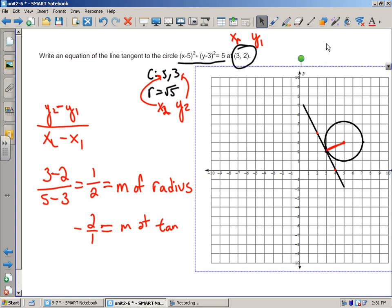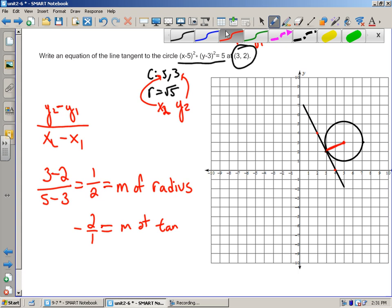So we're still trying to find this. The slope of the tangent is -2. Now once we have the slope of the tangent and we have a point on this line, which we've already said is (3,2), we just plug them in. We've got slope intercept form: y = mx + b.